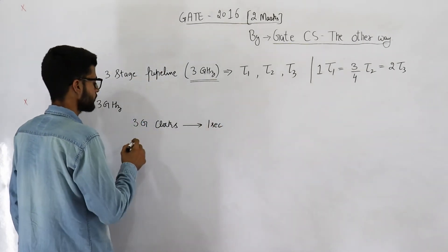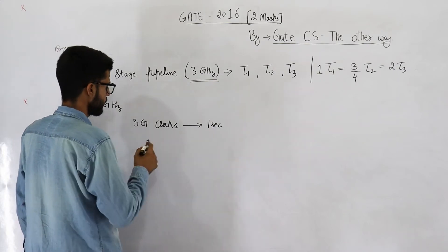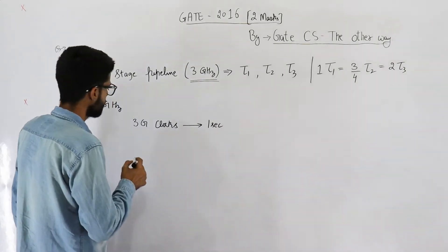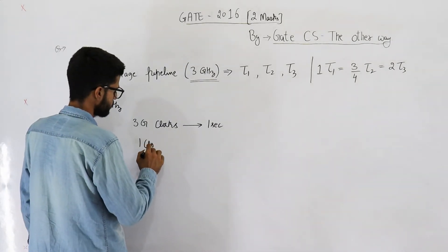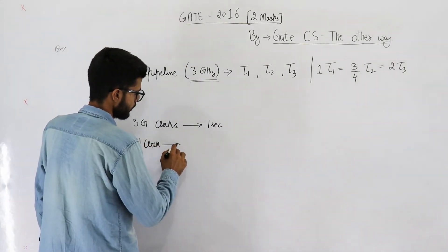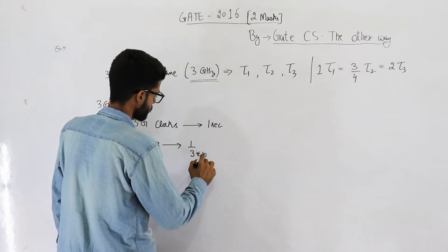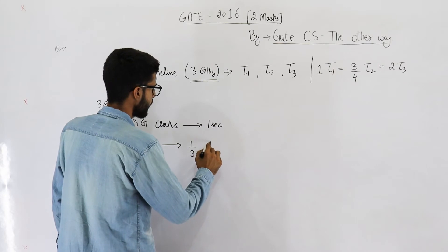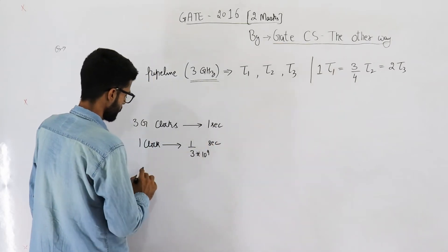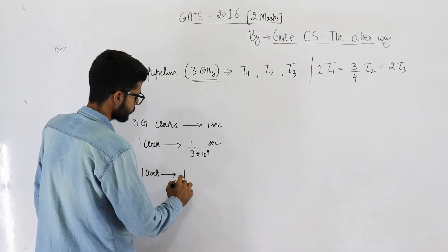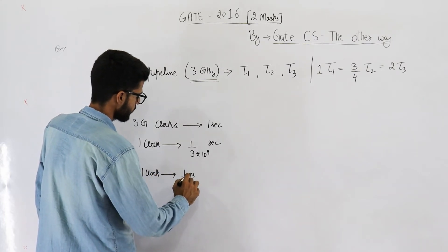You bring this 3 GHz to this side and also replace GHz by 10 raised to the power 9. This becomes 1 clock is generated after 1 by 3 into 10 raised to the power 9 seconds, which means 1 clock requires 1 by 3 nanosecond.